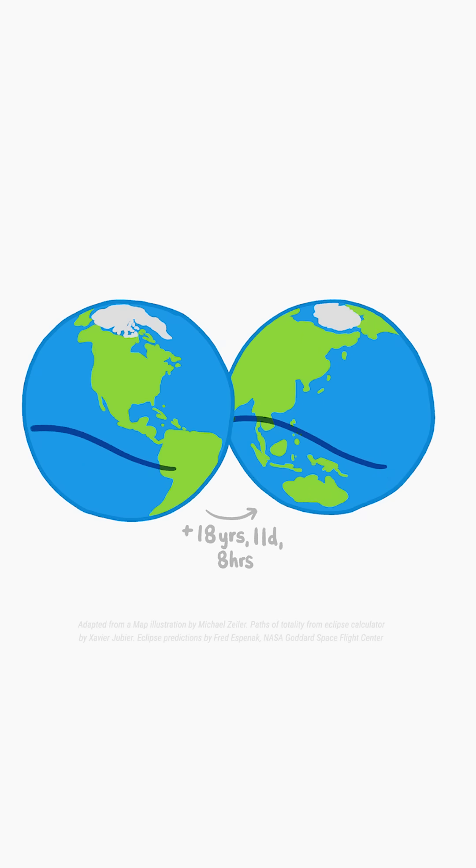However, because of those extra 8 hours, the Earth will have rotated 120 degrees farther around, and the eclipse path will be shifted 120 degrees westward of the last one.